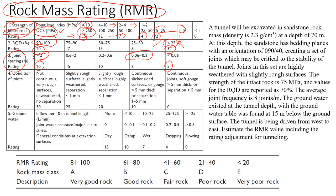Conditions of joints is of course very important — we actually need to go and look at the joints in the field. If the surface is rough, the rating is higher; when we have a sleek inner surface, the rating will decrease. Also, if there is no separation between discontinuities, the rating will be high. If there is separation, the rating decreases, and if we have filling in between discontinuities, the rating will decrease even more.